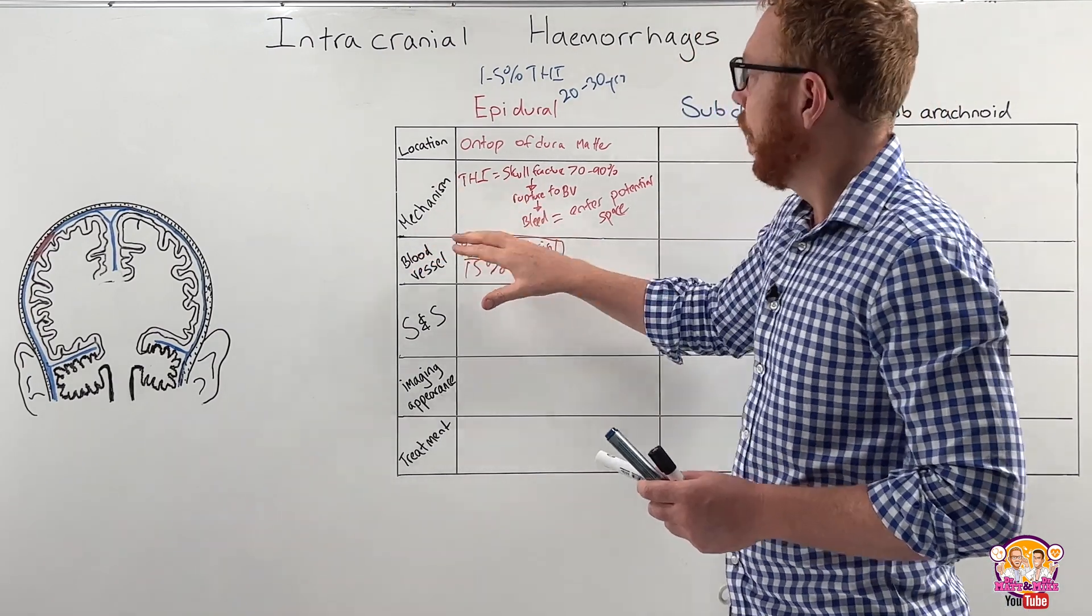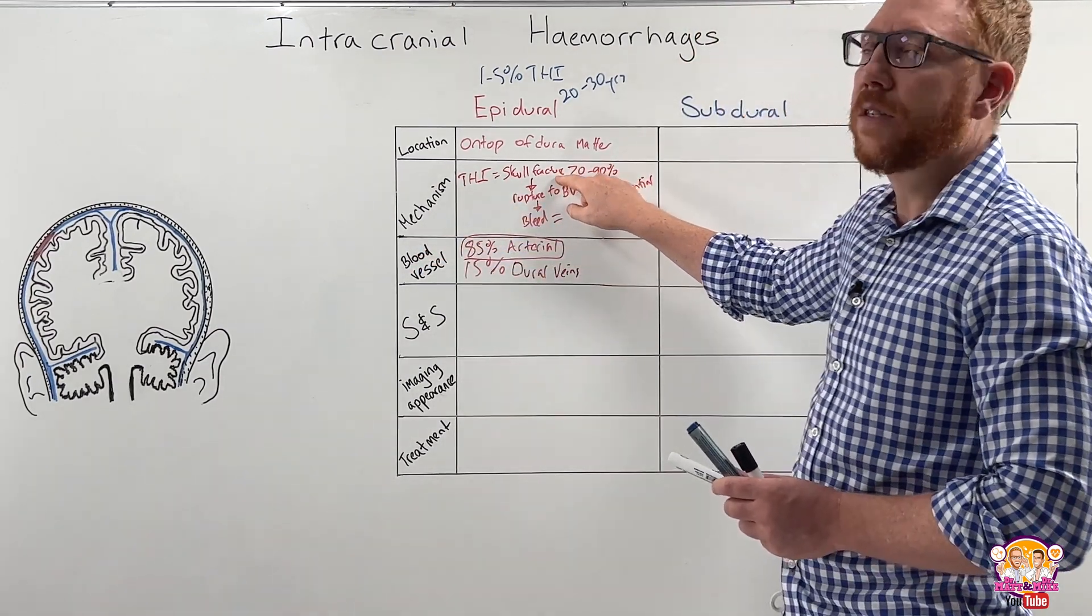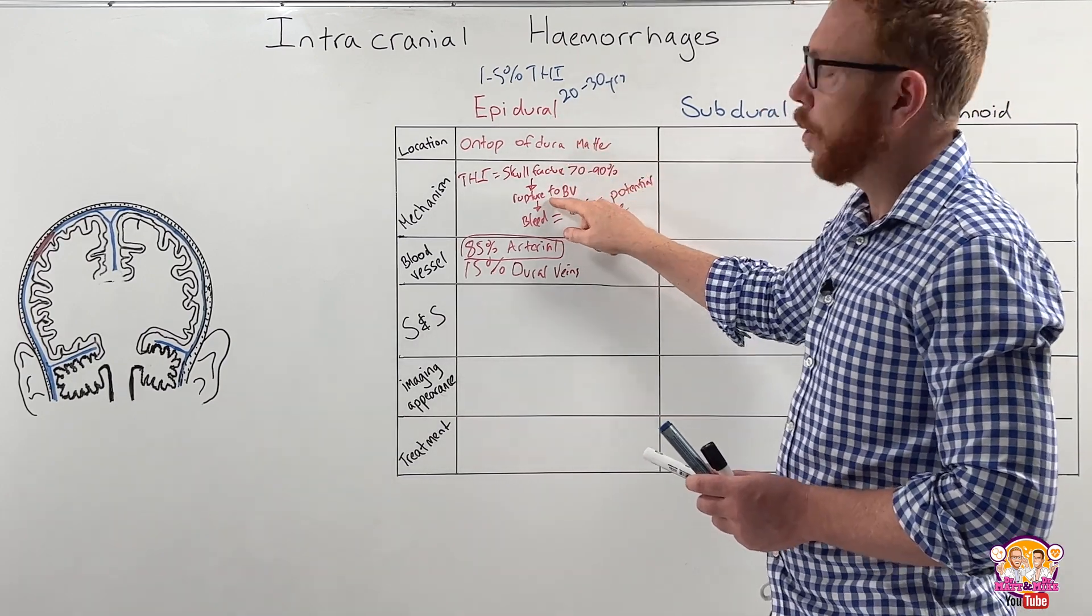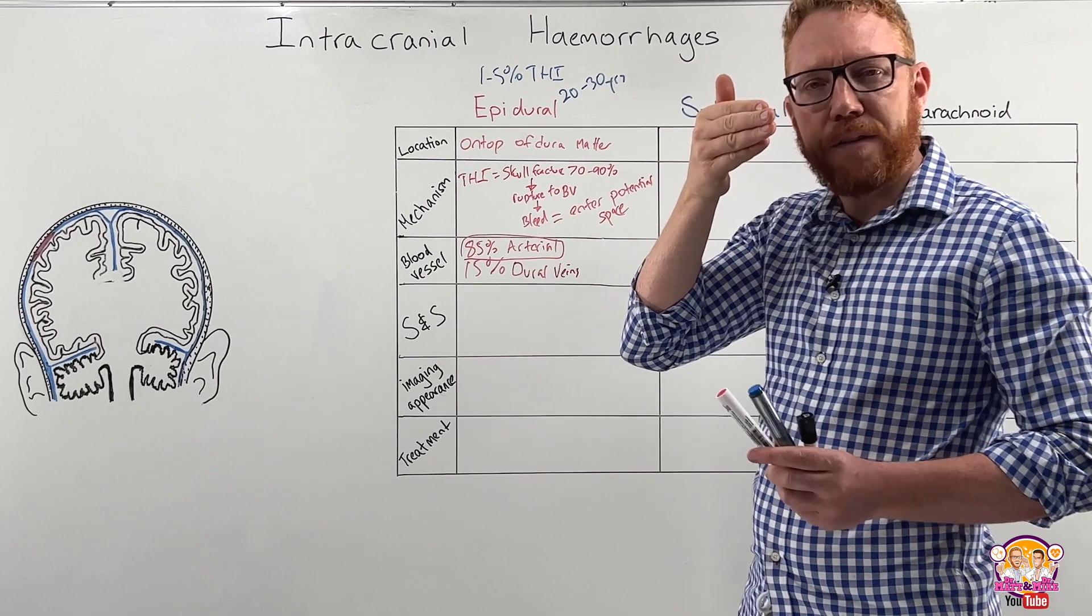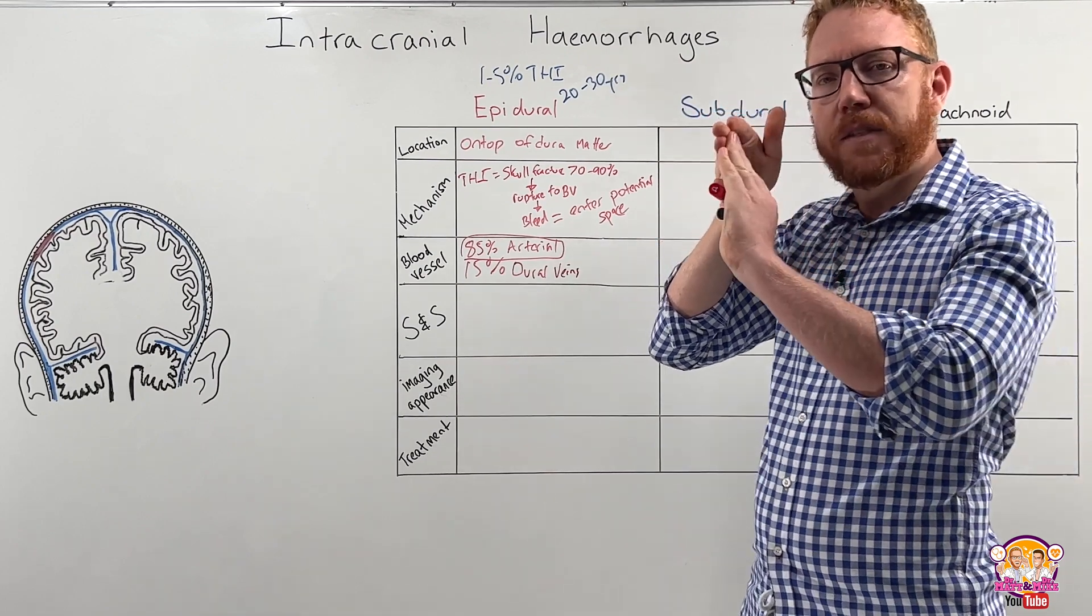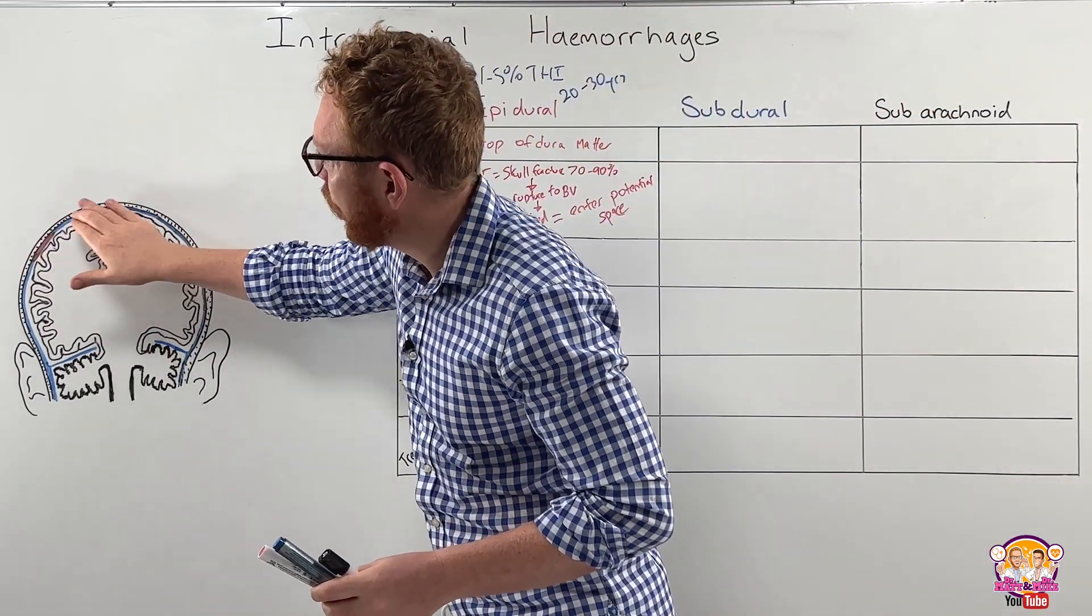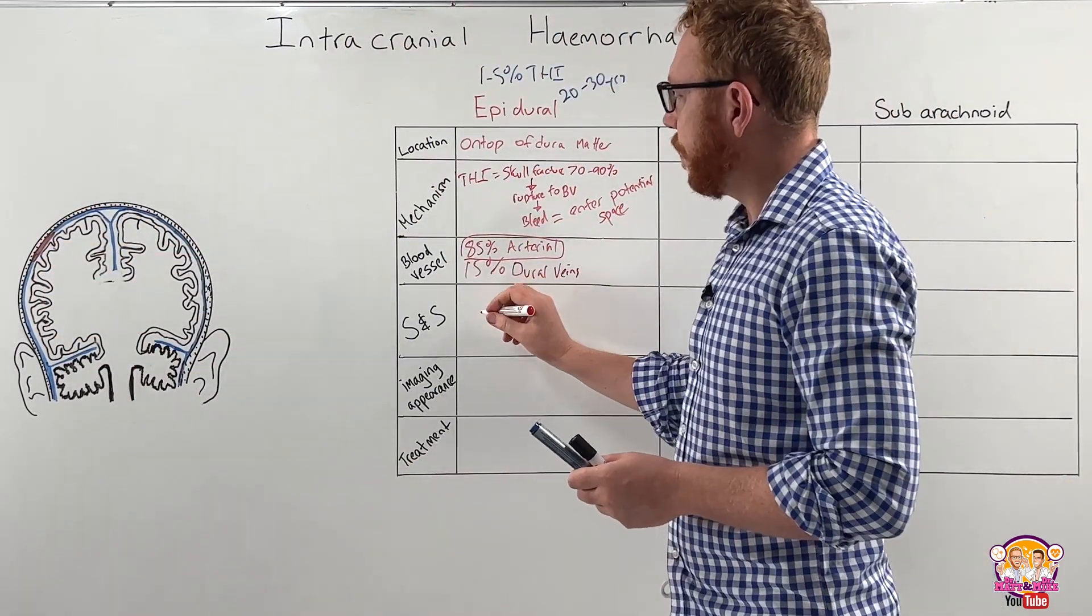Just to recap, we have a skull fracture, found in 70% to 90% of individuals with an epidural bleed, leading to a rupture of the blood vessel. So it breaks the blood vessel, the bleed starts, which closes the skull back off, enters the potential space and now starts to expand.